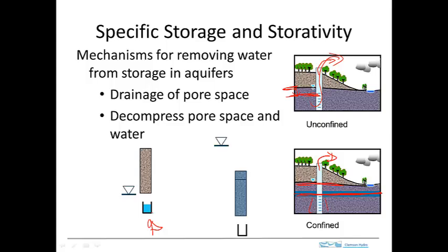The analogy for a confined system is a tube that's pressurized and filled with sand and water, pressurized with this much hydraulic head. When it's under pressure, the tube is expanded somewhat. When we drop the pressure — drop the head — we don't allow the pores to drain, but the vessel contracts and the water expands. As a result, the vessel holds less water than it did at high pressure, and that water comes out and accumulates. That's the water released from storage due to the compressibility of the water and the aquifer.